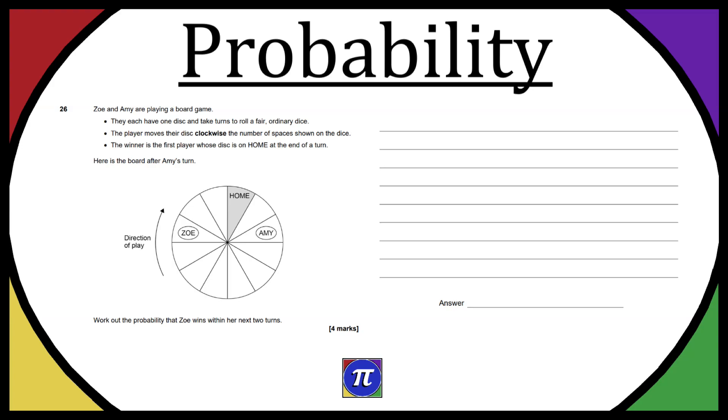We have question 26 here from the past paper linked down below, and this is a probability question. It says Zoe and Amy are playing a board game. They each have one disc and take turns to roll a fair ordinary dice.